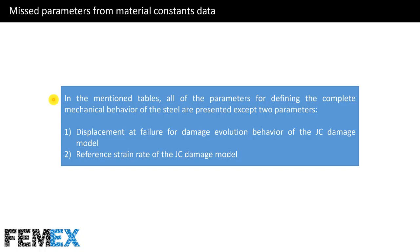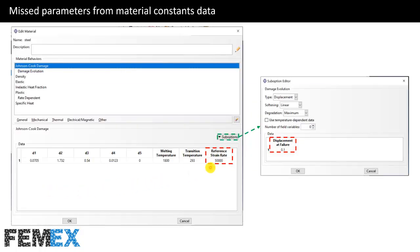Now I want to talk about missing parameters from the material constants data. In the mentioned tables, all parameters for defining the complete mechanical behavior of steel are presented except two: displacement at failure for the damage evolution behavior of the Johnson-Cook damage model, and the reference strain rate of the Johnson-Cook damage model.